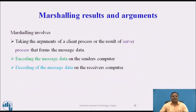Marshaling Results and Arguments: Marshaling involves taking the arguments of a client process or the result of a server process that form the message data. It encodes the message data on the sender's computer — converting program objects into a stream form suitable for transmission. Decoding on the receiver's computer reconstructs program objects from the stream form. For successful encoding and decoding, the order and representation method (tagged or untagged) must be known to both client and server. This provides type safety between client and server. The marshaling process must reflect the structure of all types of program objects used in the concerned language.